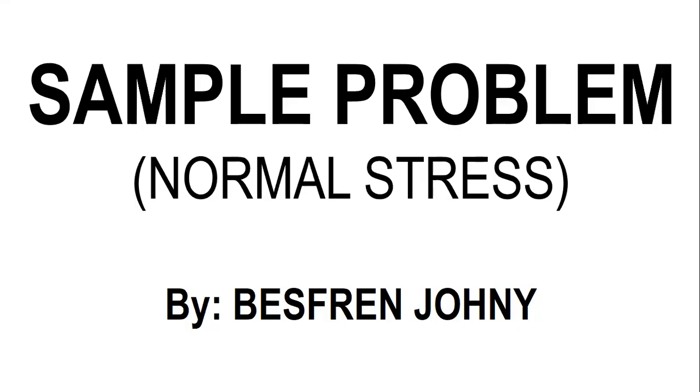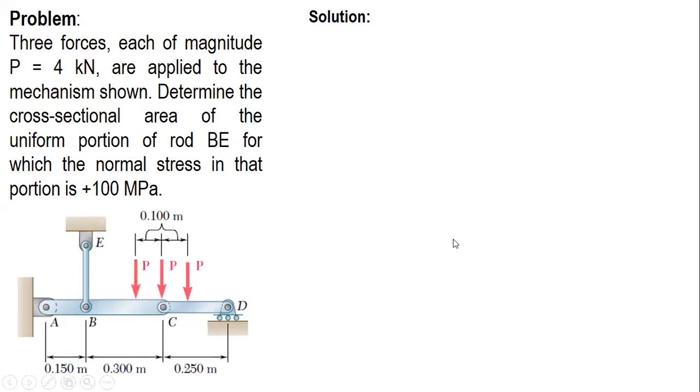I'm going to solve another problem on normal stress. Here's the problem: three forces, each of magnitude P equal to 4 kilonewtons, are applied to the mechanism shown. Determine the cross-sectional area of the uniform portion of rod BE for which the normal stress in that portion is 100 megapascals.